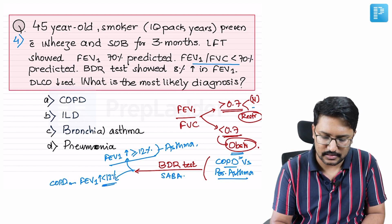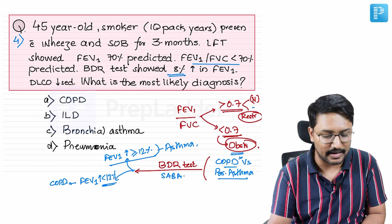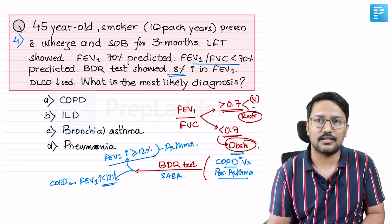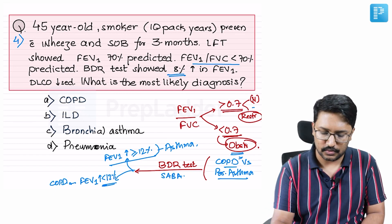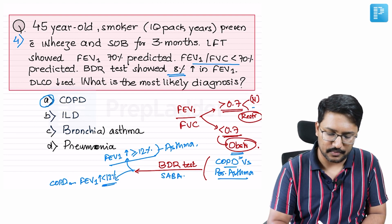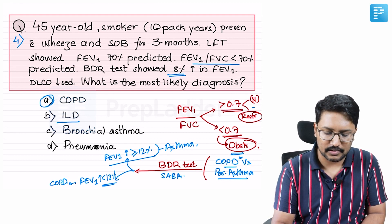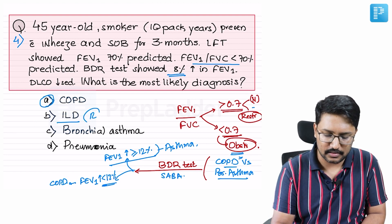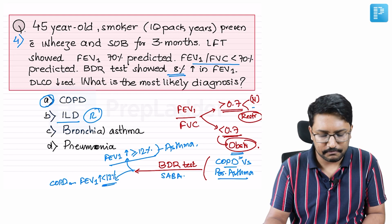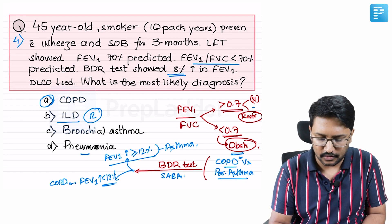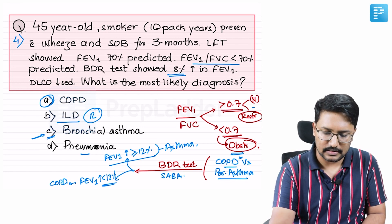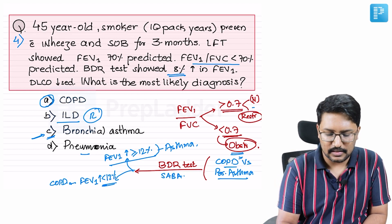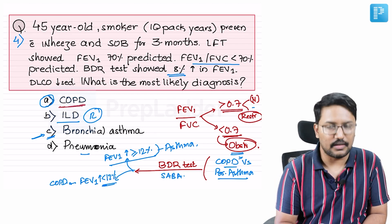In this case, FEV1 increased by only 8%, which does not satisfy the diagnostic criteria for bronchial asthma. Interstitial lung disease is a restrictive disorder and doesn't fit. Pneumonia does not fit the picture either. Bronchial asthma criteria are not met. Therefore, the correct diagnosis in this case is COPD.